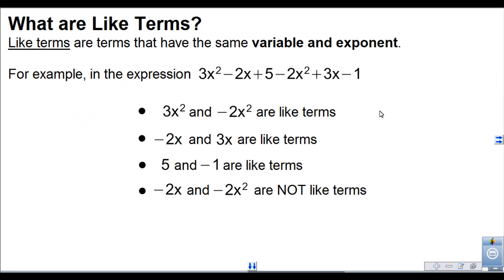Like terms are terms that have the same variable and the same exponent. Looking at this expression, the 3x squared and the negative 2x squared are what we call like terms, because both of them have an x and both of them have an exponent of 2 on the x.